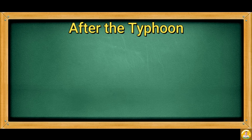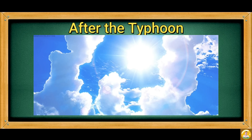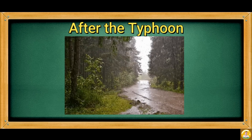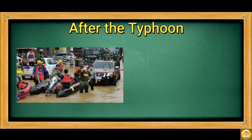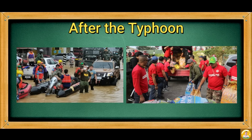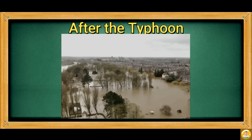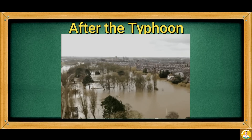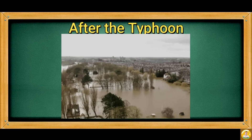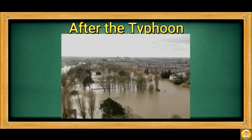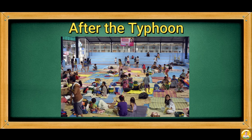After a typhoon, the sun becomes visible and the sky becomes clearer, though there might be scattered rain showers. Rescue and relief operations are ongoing. There might be an outbreak of waterborne diseases, influenza, and dengue. Some areas may still be flooded and recovering. If a certain place is severely devastated, many residents may be staying in evacuation areas.